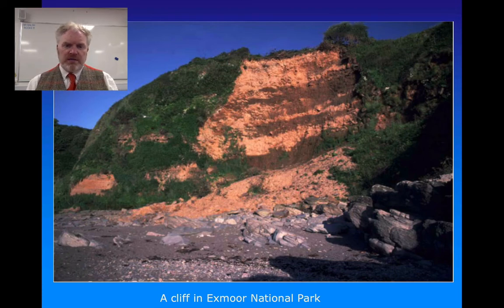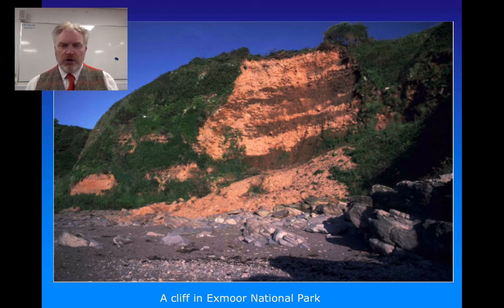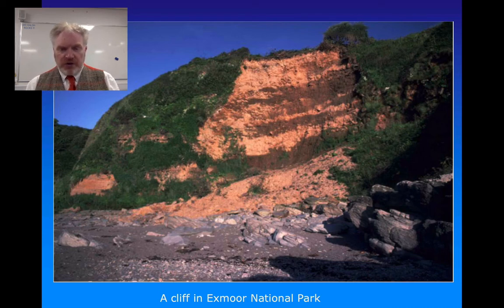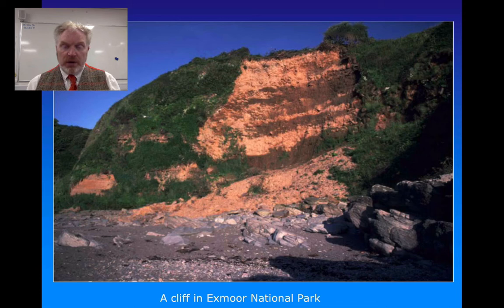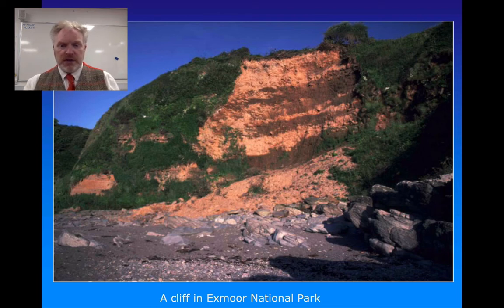Also in a periglacial environment, we get the deposition of a very fine-grained aeolian sediment called loess. This is rock dust — the type of rock flour generated by the grinding of rock along the base of a glacier — that is very easily mobilised by the wind when it dries out. It is generally problematic stuff because of significant engineering problems where large deposits occur. It is extremely well sorted, extremely fine-grained, and very easy to erode.